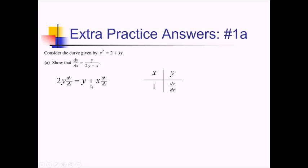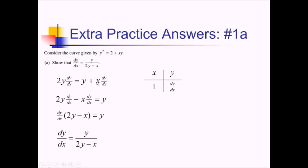At this point I have to isolate dy over dx. I'll keep this dy over dx on the left side and subtract the x dy over dx term to get all the dy over dx's together. I can now factor out dy over dx, leaving 2y minus x on the left side. Then dividing by 2y minus x gives us exactly what they wanted in part a.